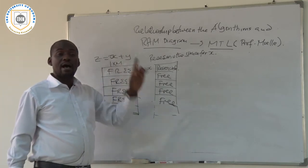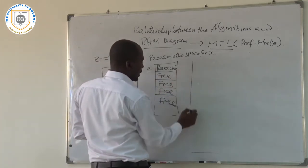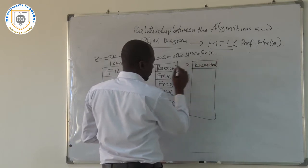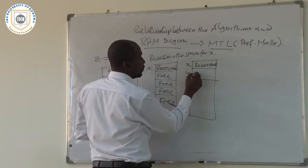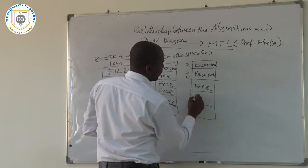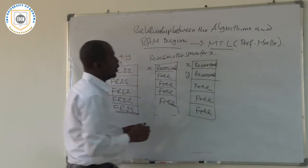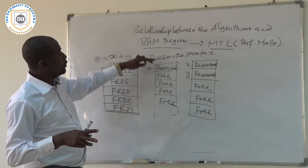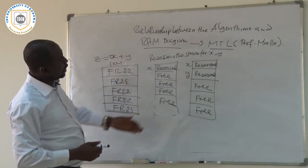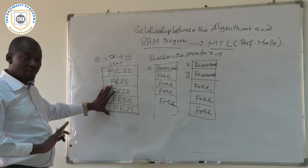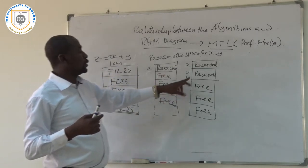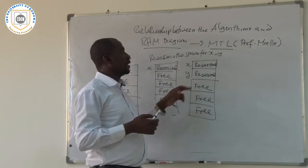After reserving the space for X and Y, our RAM will look like this: the first space is reserved for X and the second space is reserved for Y. The remaining spaces continue to be free. So after the first two processes of reserving space for inputs X and Y, we expect our RAM to show two reserved spaces with the rest free.